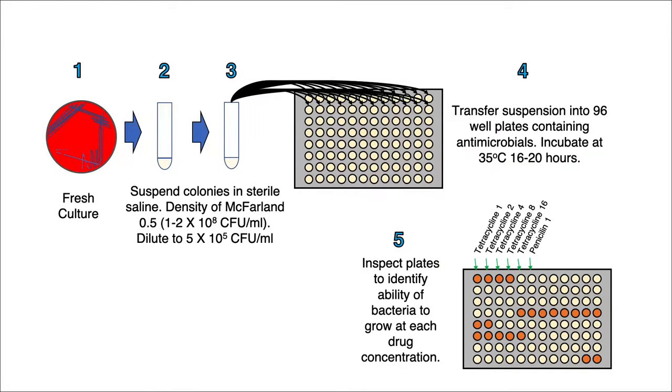In this cartoon, which depicts the entire broth micro-dilution process, in step five, or the bottom right-hand corner of the cartoon, you can see a sample plate which has bacterial growth indicated by the presence of an orange circle and inhibited growth by a cream-colored circle.